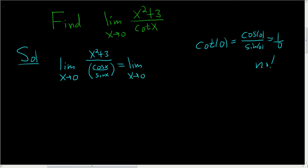We have x squared plus 3 being divided by this, so it's multiplied by the reciprocal. That's x squared plus 3 times sine over cosine.